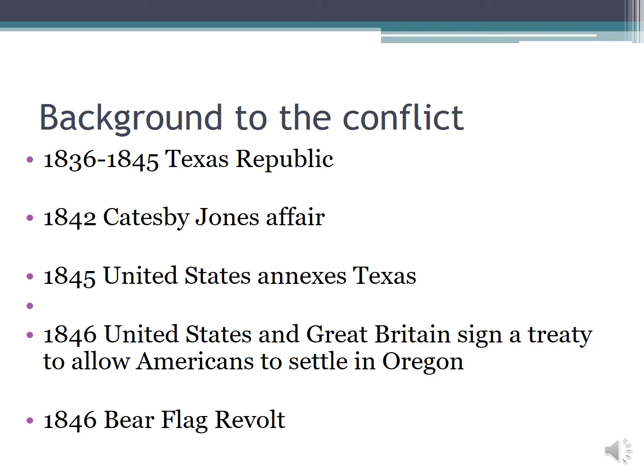In 1845, the United States officially annexed Texas. President Tyler, before leaving office and turning it over to President Polk, officially annexed Texas for the United States. When this happened, the Mexican government cut all diplomatic relationships with the United States, because they saw this as an act of aggression. They had never recognized Texas as an independent republic — they thought of Texas as being in rebellion from 1836 on. So that caused immediate tension between the United States and Mexico in 1845.